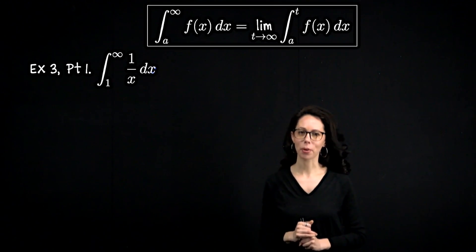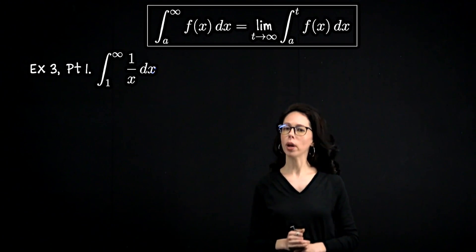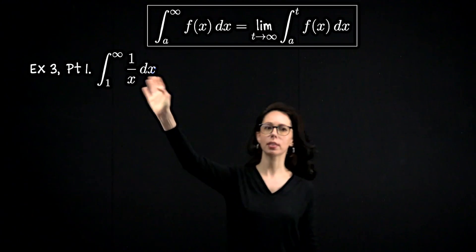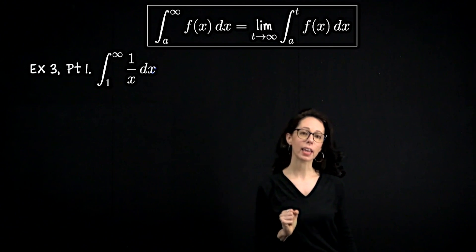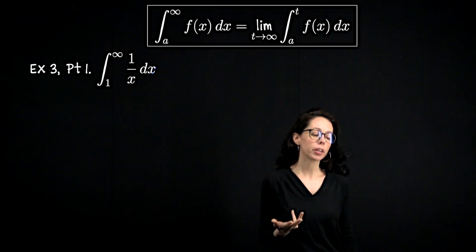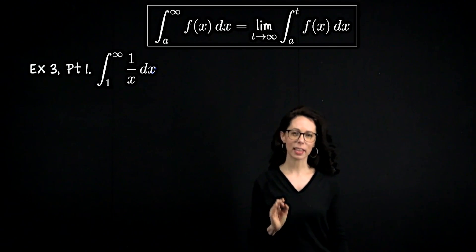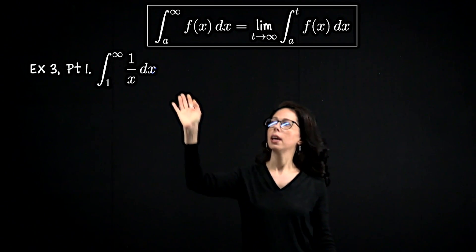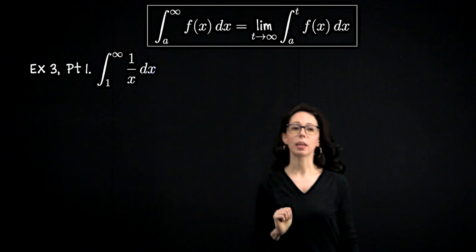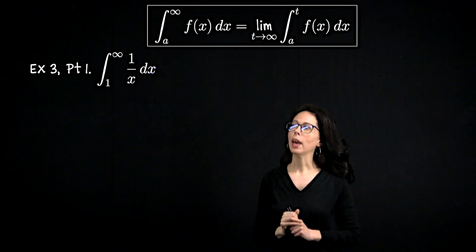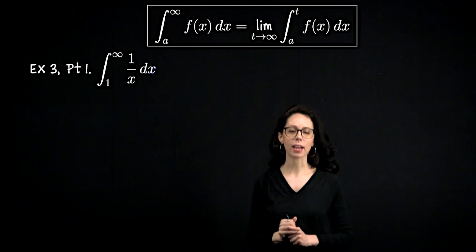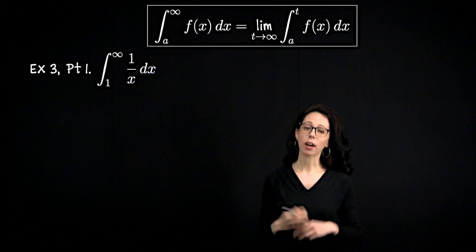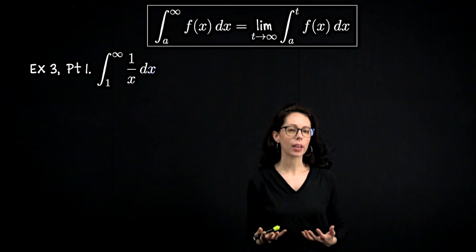Let's look at this improper integral: the integral from 1 to infinity of 1/x dx. This is part 1 of a two-part problem. We're going to take 1/x and then look at similar expressions of the form 1/x^p. So we'll isolate this case first, then generalize and make a statement about expressions that look like this in part 2. The question is: is the area enclosed between the x-axis and the hyperbola y = 1/x from 1 to infinity finite or infinite?